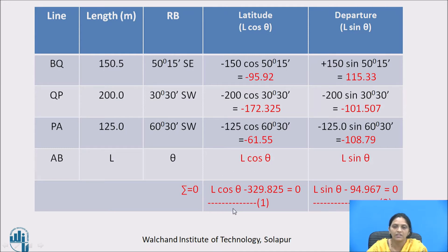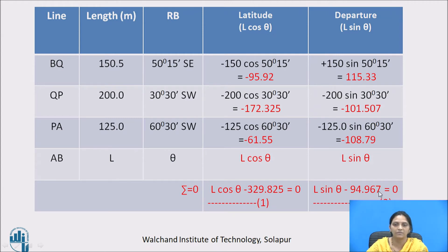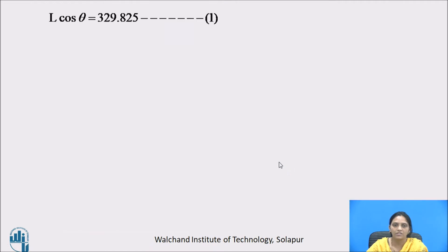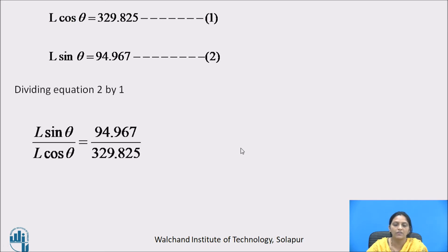The summation of latitude must be zero. So we get one equation: L cos theta minus 329.825 equals zero. And summation of departure must also be zero, giving us L sin theta minus 94.967 equals zero. This is equation one and this is equation two. Dividing equation two by equation one, we get L sin theta divided by L cos theta equals 94.967 divided by 329.825. So tan theta equals 0.288 and theta equals 16 degree 3 minutes.